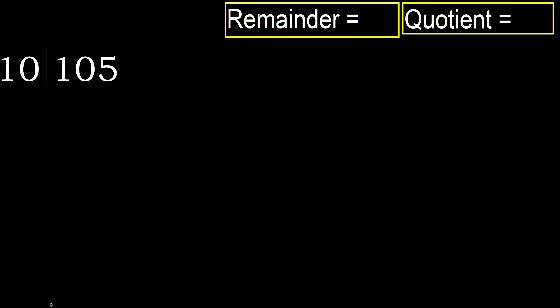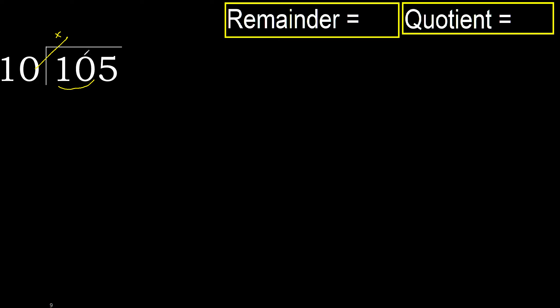105 divided by 10. 1 is less, therefore next. 10 is not less, therefore work with 10. 10 multiplied by which number is nearest to 10, but not greater.